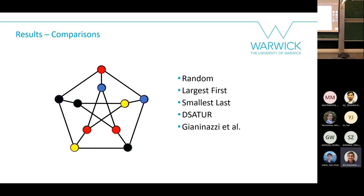The final comparison algorithm is by Giannatsi et al., a paper that applied reinforcement learning to graph coloring in essentially the same way I was trying to do, so it's sensible to compare against it.